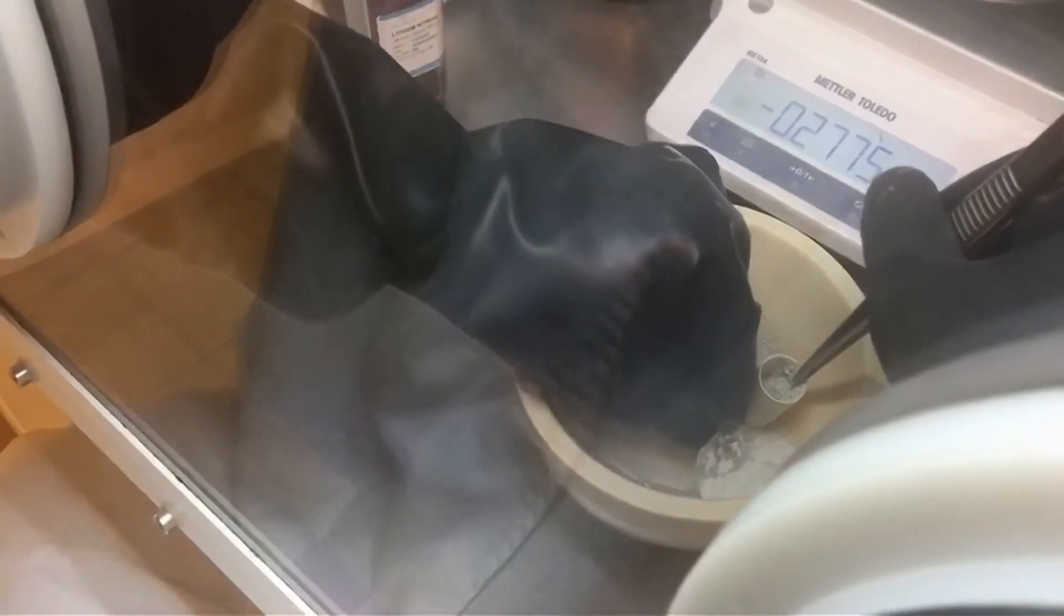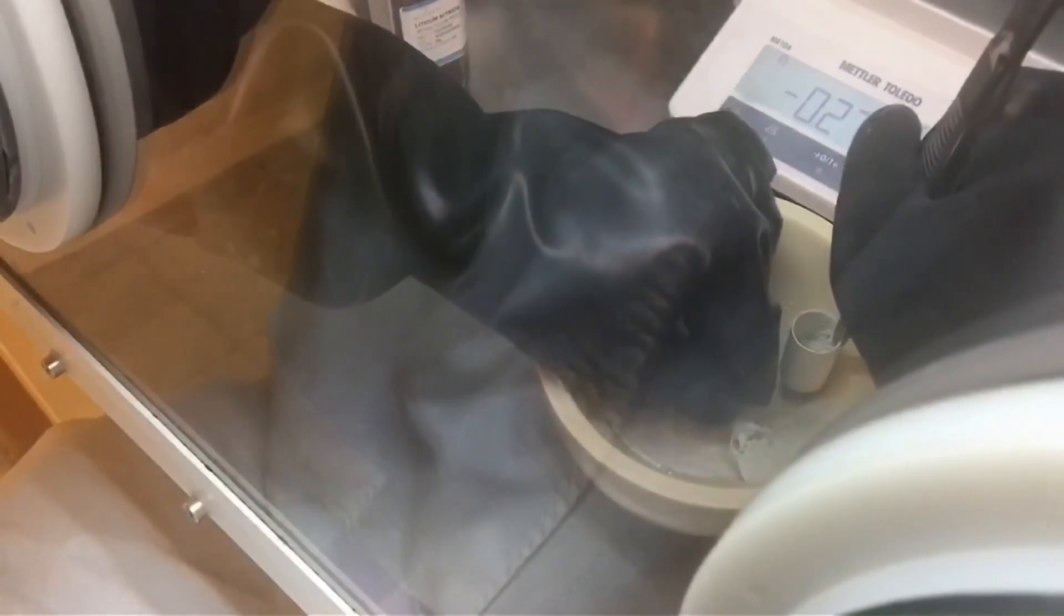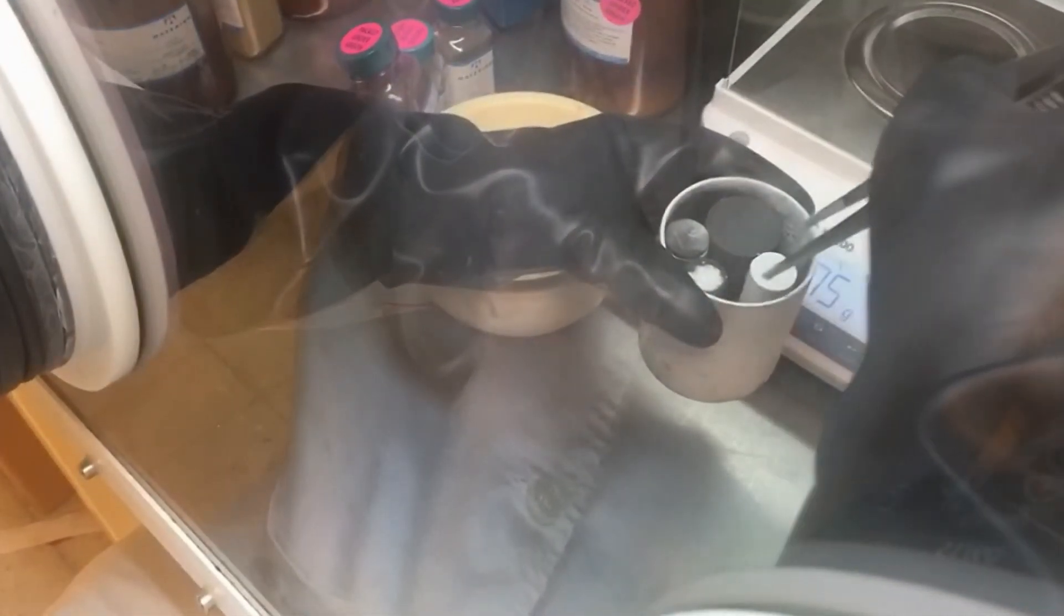After we are grinding, put the precursors into the boron nitride crucibles. Put the small BN crucibles into big BN crucible carefully.